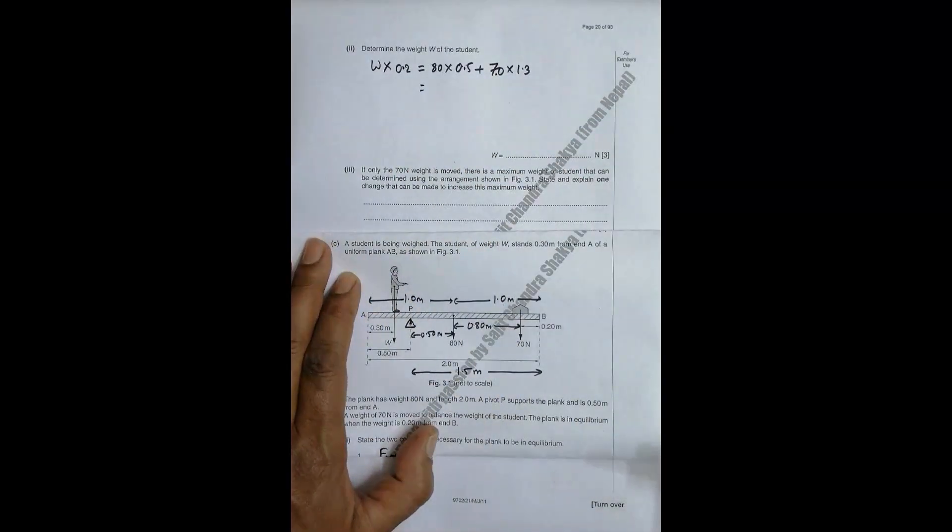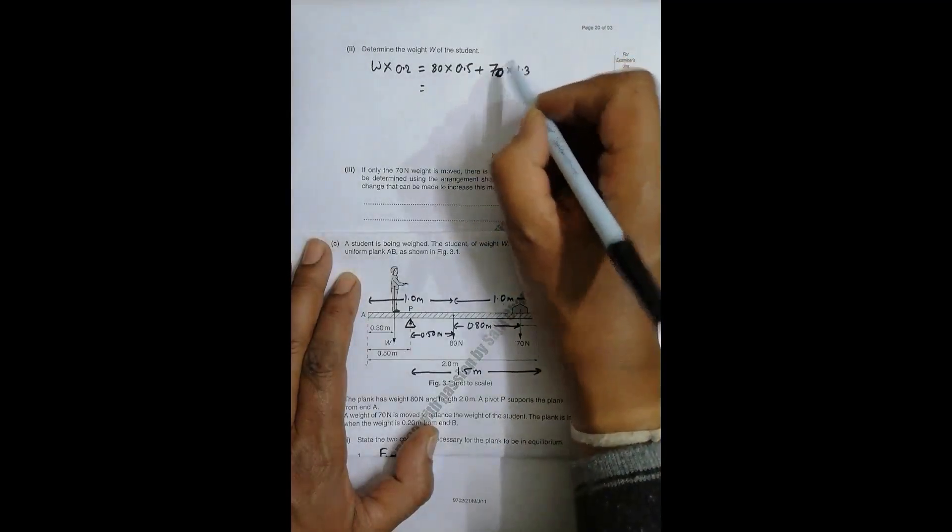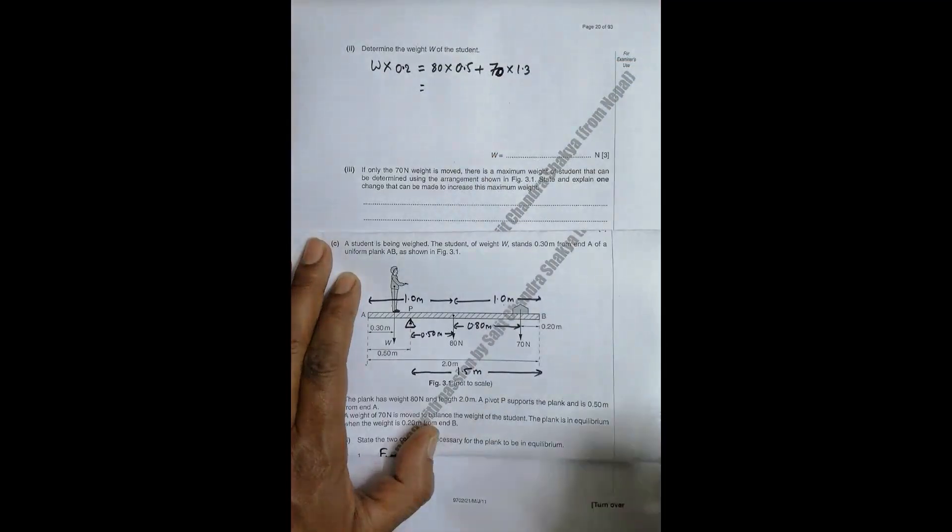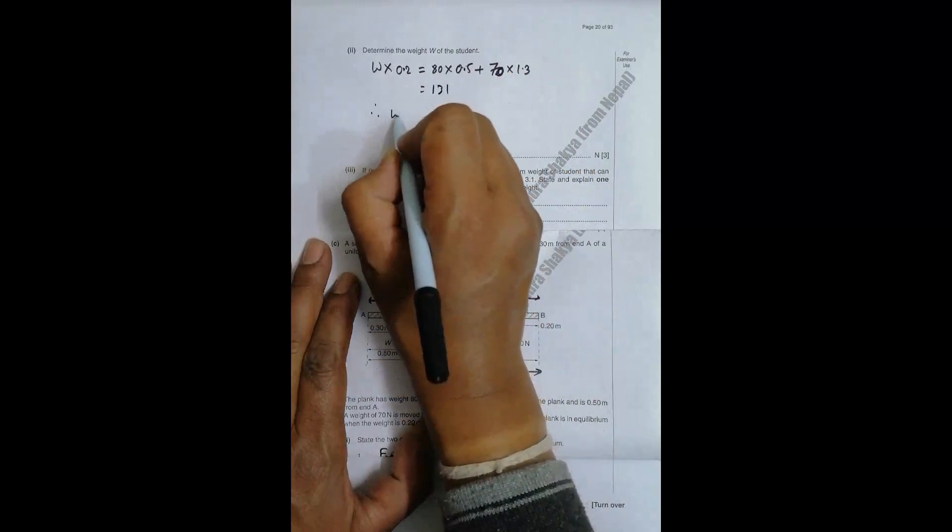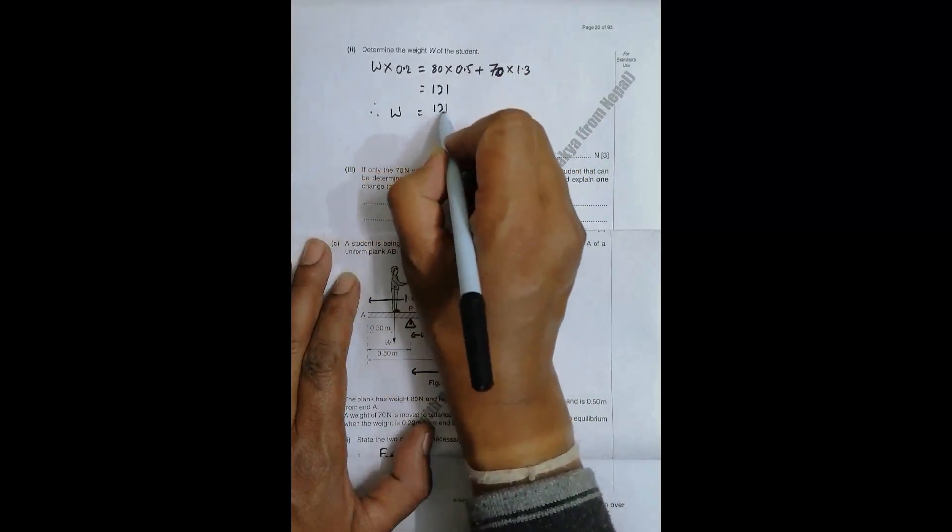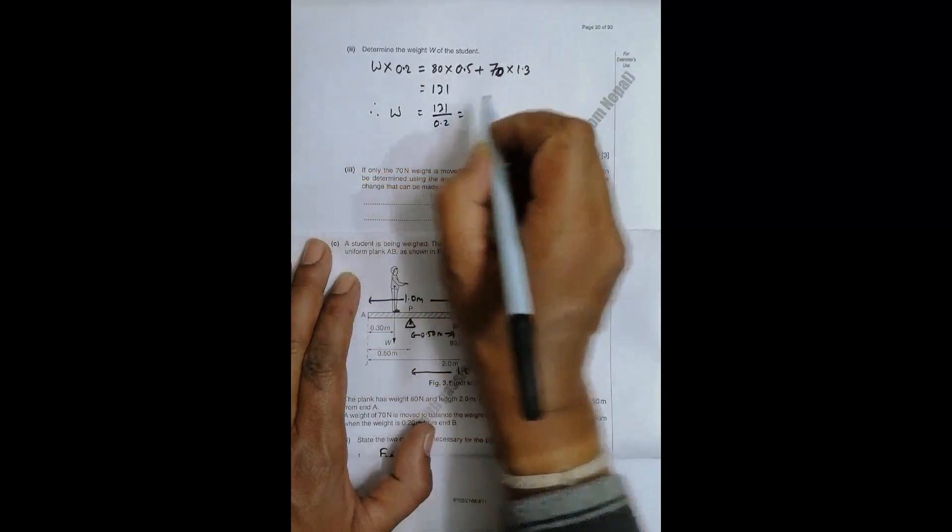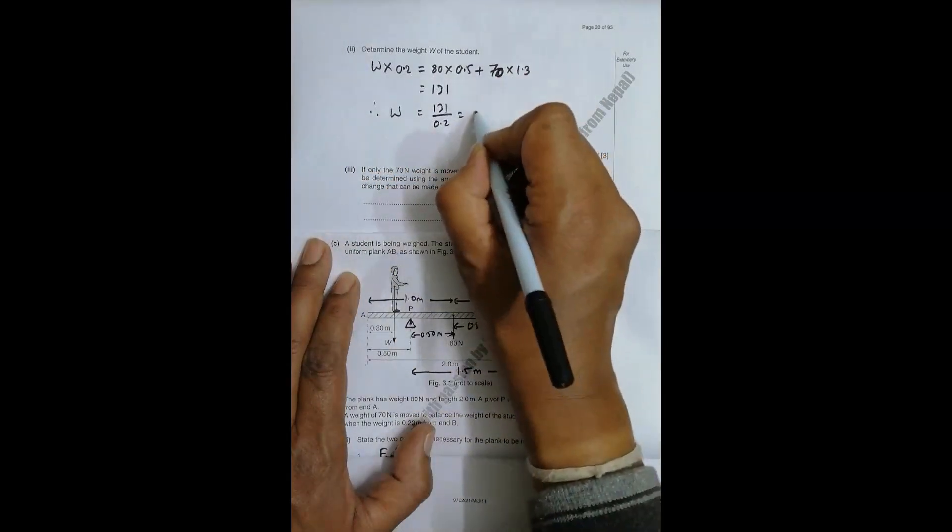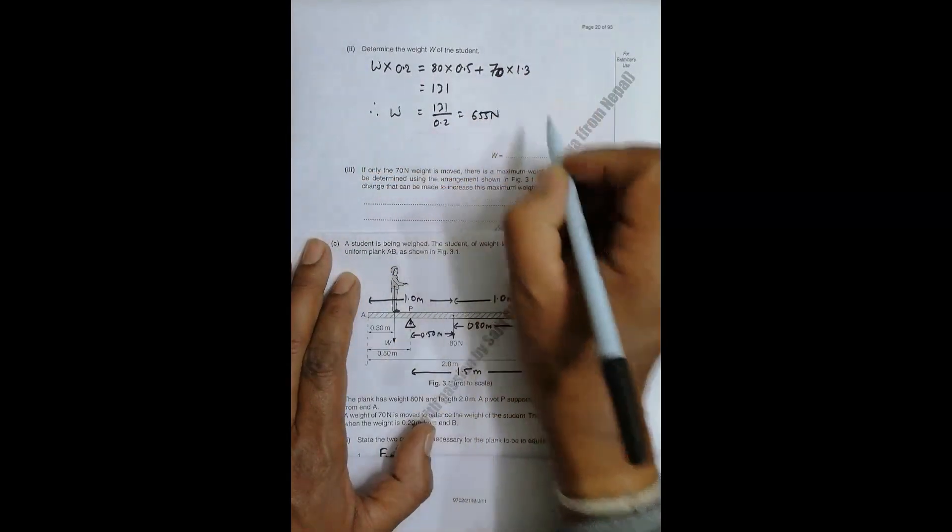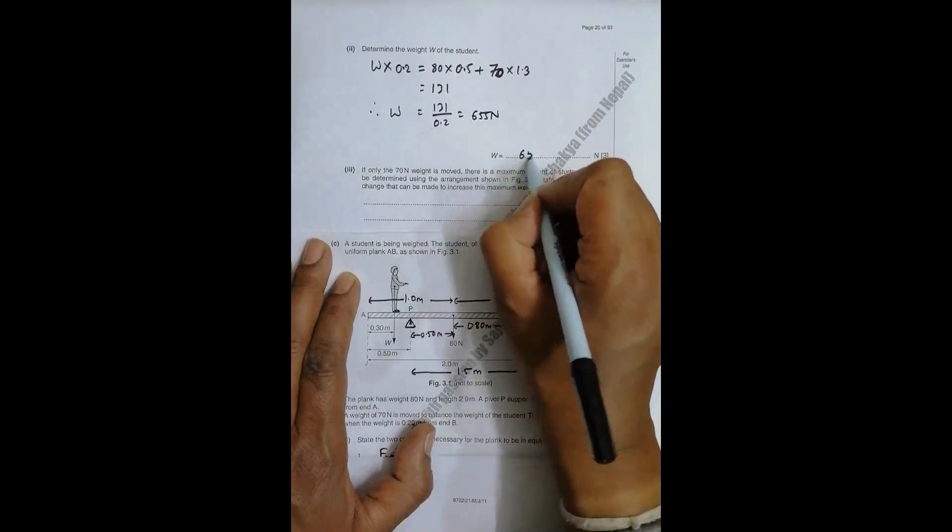So we will have 80 into 0.5 is 40 plus 70 into 1.3 equal to 131. So this is equal to 131, which gives us therefore W is equal to 131 divided by 0.2, equal to 655 Newton. So 655 Newton is the answer.